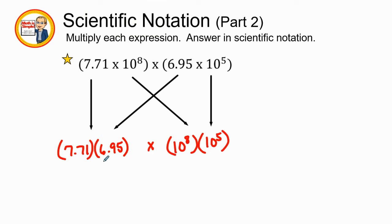When we multiply these two terms together, 7.71 times 6.95 gives us 53.5845, and 10 to the 8th power times 10 to the 5th power is 10 to the 13th power. Now we notice that it's 53, so that's greater than 10, so I have to divide it by 10 to make it smaller by 1. If I make the number smaller, I need to make my exponent larger. So my final answer would be 5.35845, and I have to keep all of these digits together to keep its accuracy, times 10 to the 14th power.